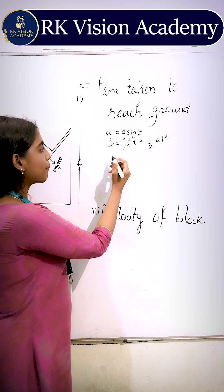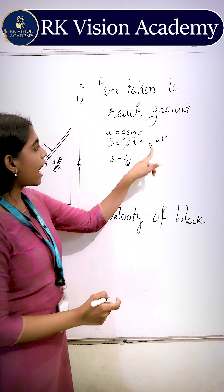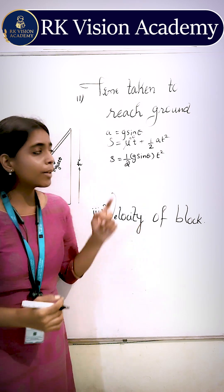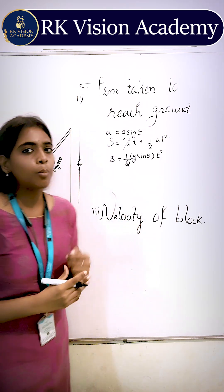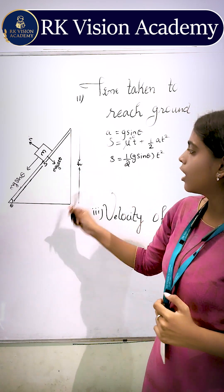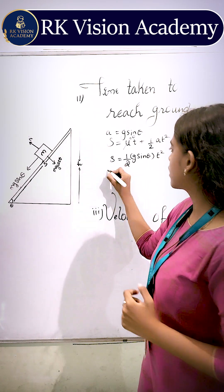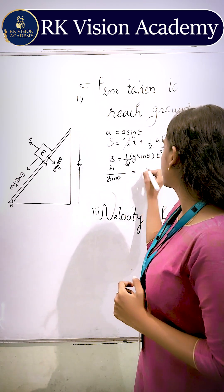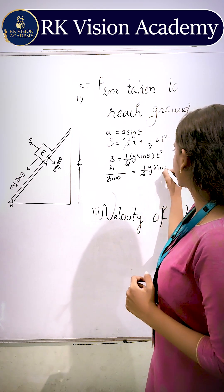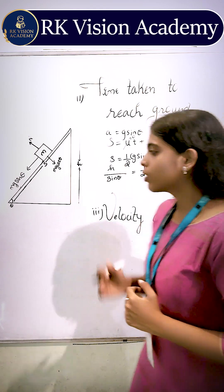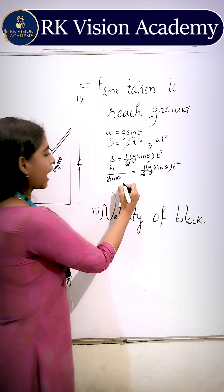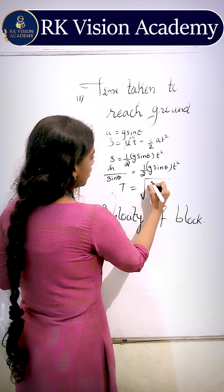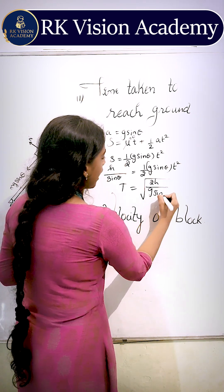Applying the equation, we get s = ½ g sin theta × t². The distance travelled by the block — if we observe the diagram, using trigonometry, the total distance is the height of the wedge divided by sin theta. From this equation, we get the total time taken by the block to reach the ground as root of 2h divided by g sin²theta.